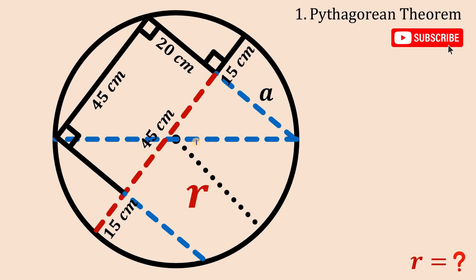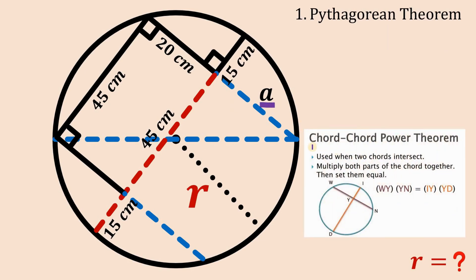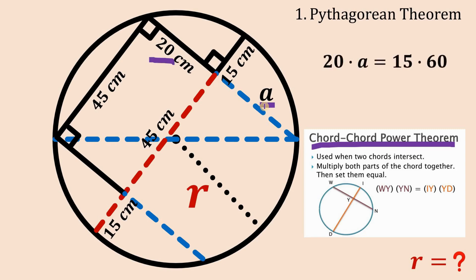From here we can use the chord-chord power theorem to find the measure of segment a. Using the chord-chord power theorem: 20 times a equals 15 times the sum of 45 and 15, which is 60. Dividing both sides by 20, we get a equals 15 times 3, or simply 45 centimeters.